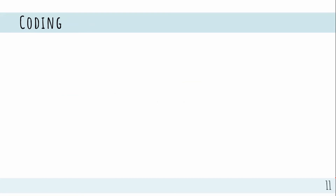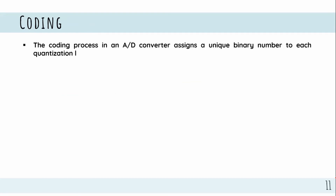The coding process in an analog-to-digital converter assigns a unique binary number to each quantization level. This binary number is used because it is a digital signal — a binary signal of 0 or 1.